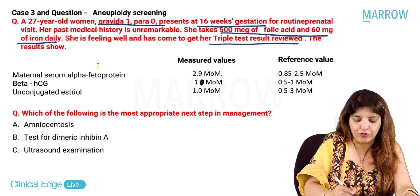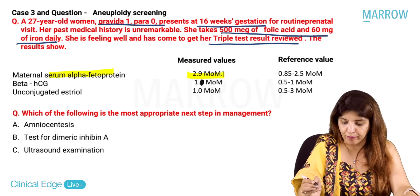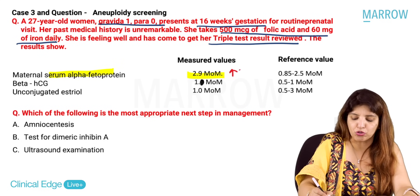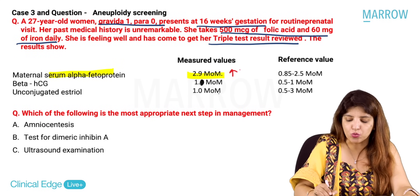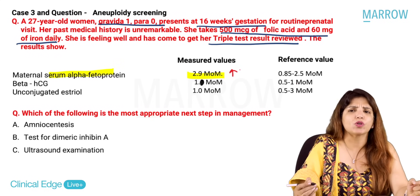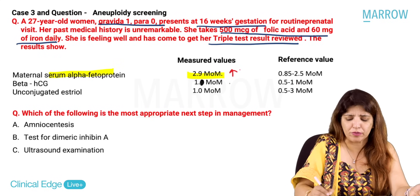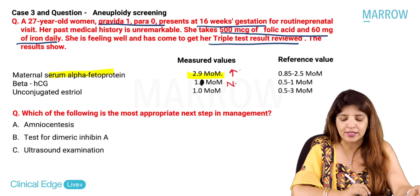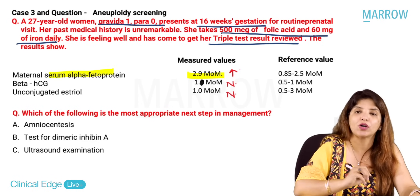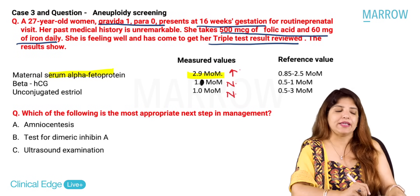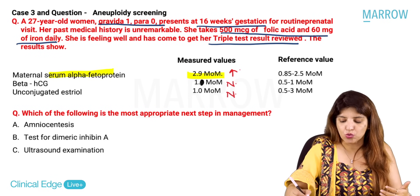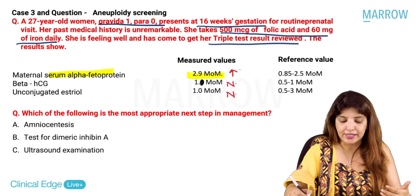Triple test results: maternal alpha fetoprotein 2.9 MOM (reference 0.85–2.5 MOM) — elevated. Beta-HCG 1 MOM (reference 0.5–1) — normal. Unconjugated estriol 1 (reference 0.5–3) — normal. Interpretation: in trisomy 21, expect low AFP, low E3, high HCG, high inhibin A. In trisomy 18, all markers are low. Neither pattern fits our patient.